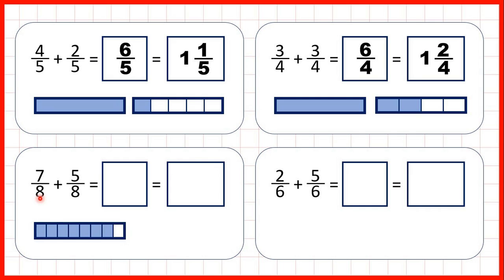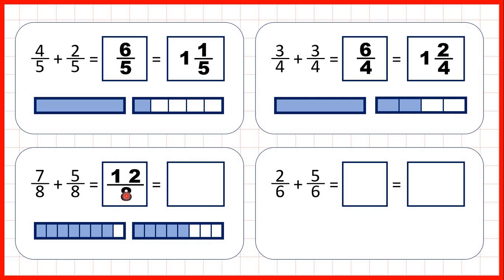Now seven-eighths — seven parts out of eight — and we're adding five-eighths. That gives us twelve-eighths altogether, because when we add fractions with a common denominator, the denominator stays the same in our answer and we just add the numerators. You can see that each of these pieces is one-eighth and we have twelve pieces altogether.